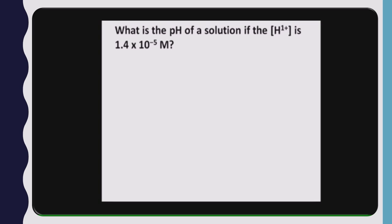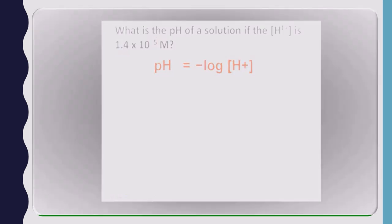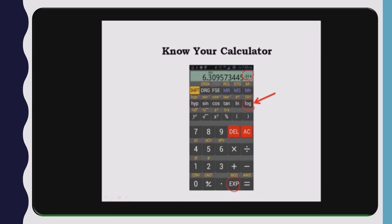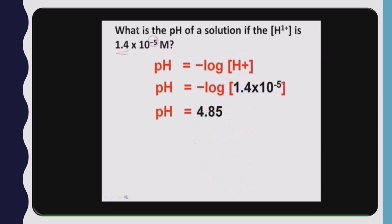Now let us see another question: what is the pH of a solution if the H⁺ ion concentration is 1.4 × 10⁻⁵ molar? You will notice that the pH of the solution will be in the range of 5. First, write the formula: pH = −log[H⁺]. Then we put in the values: pH = −log(1.4 × 10⁻⁵). To find the log of 1.4 × 10⁻⁵, we use a calculator and the log function, and we get the answer as 4.85.